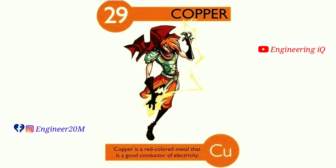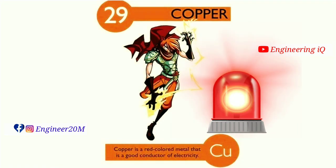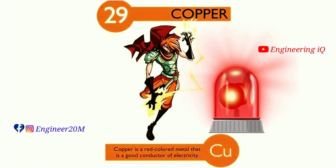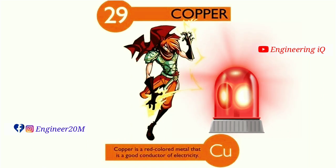Copper: atomic number of copper is 29. Copper is a red-colored metal that is a good conductor of electricity. It is denoted by Cu.